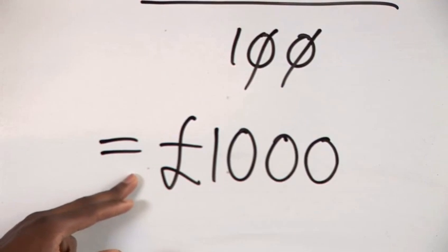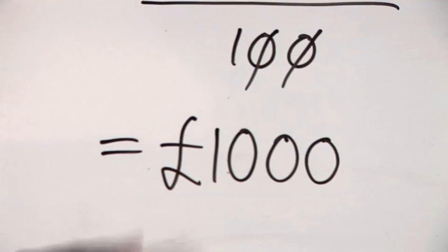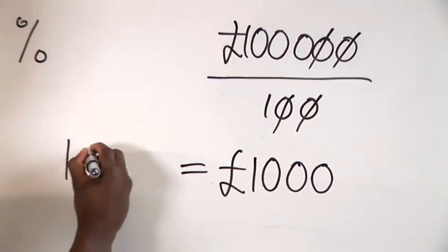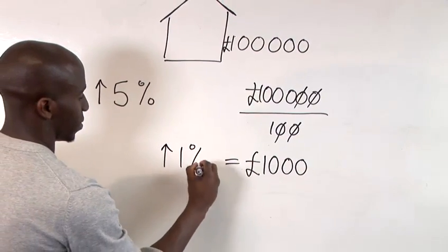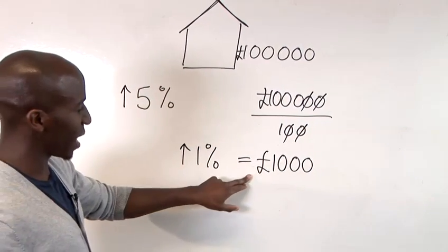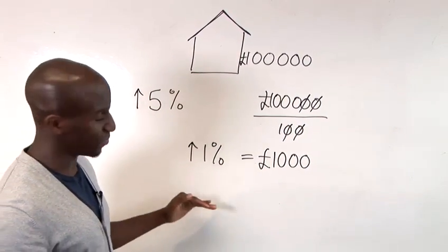Okay, so we've calculated what 1% is equivalent to. So, 1% increase. So, if now we want to look at what 5% relates to, all we would need to do is multiply this by 5.